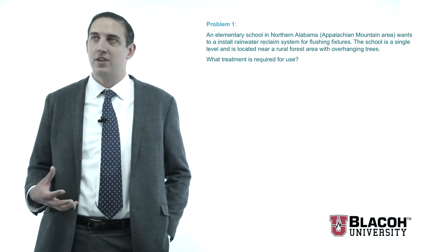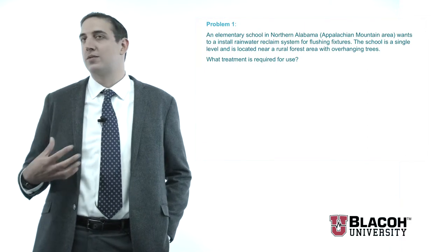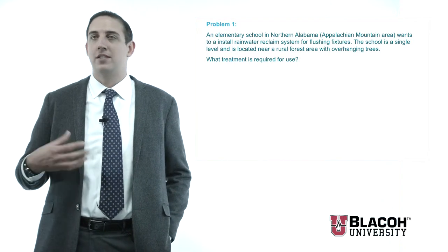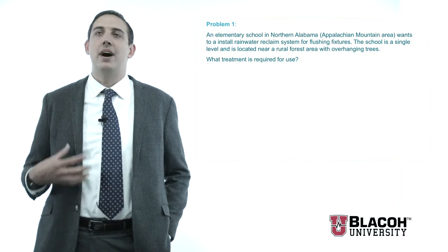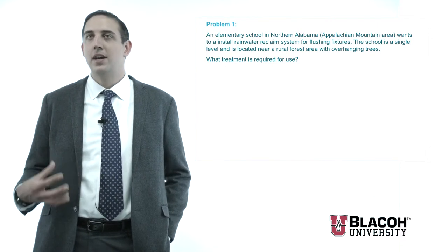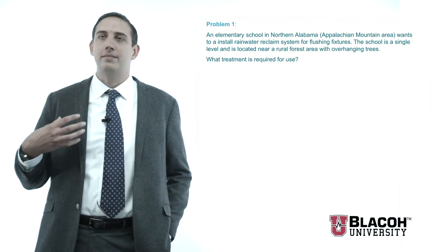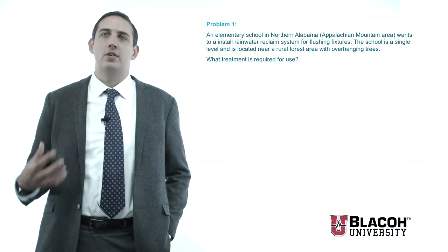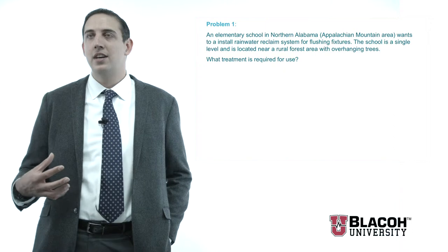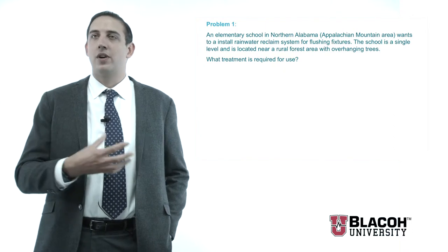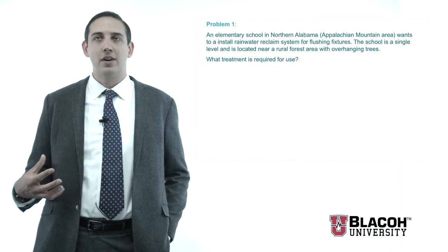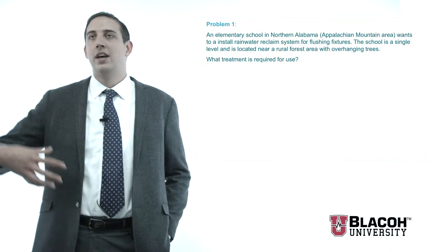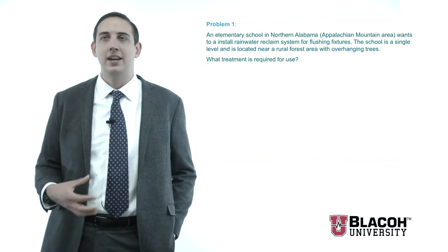We also have overhanging trees most likely, which are going to overhang onto our first-floor building. Looking at both what's around the area and the catchment surface elevation, I'm going to see a higher than average biologics buildup and a slightly higher than normal particulate buildup due to that lower elevation. As for the material of construction — being in the southeast, we don't have a lot of acid rain and probably don't have the metal leaching issues you'd typically see in a location like New York.